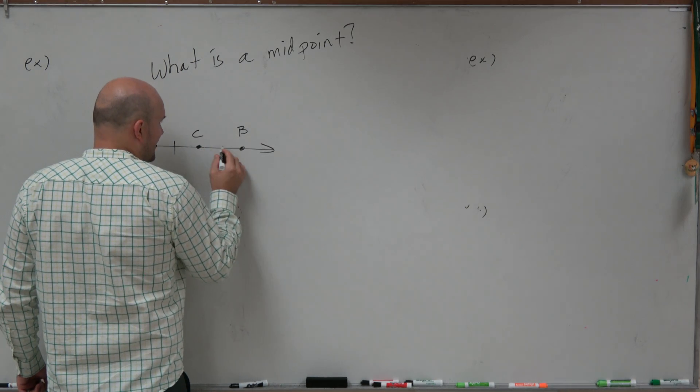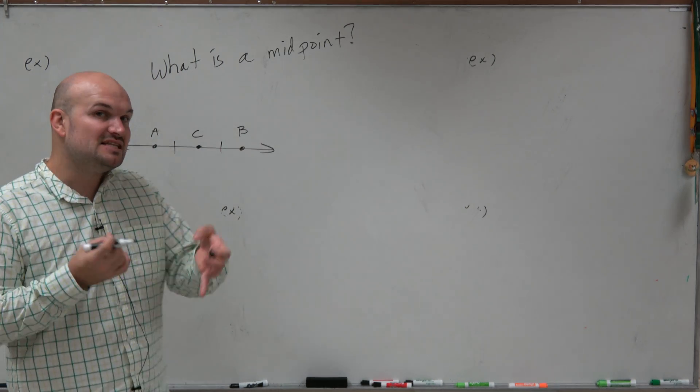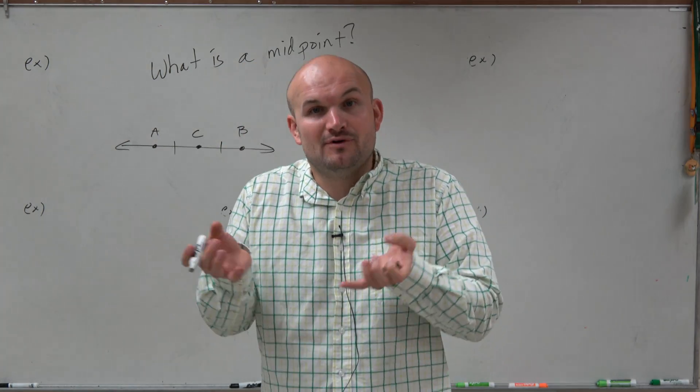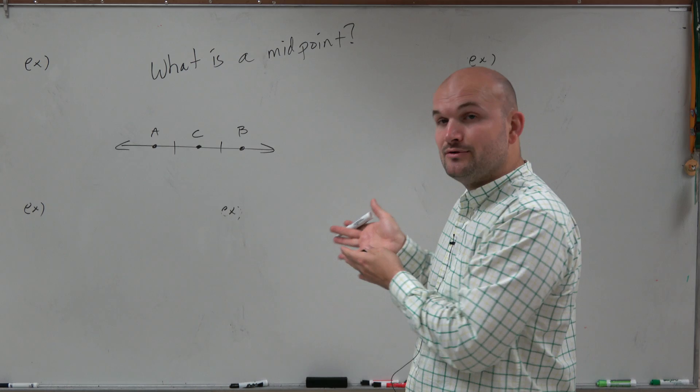So therefore, the distance from A to C is equal to the distance from C to B. And that's very helpful, especially in geometry and other classes. So therefore, now we can create an expression knowing that AC is equal to AB.